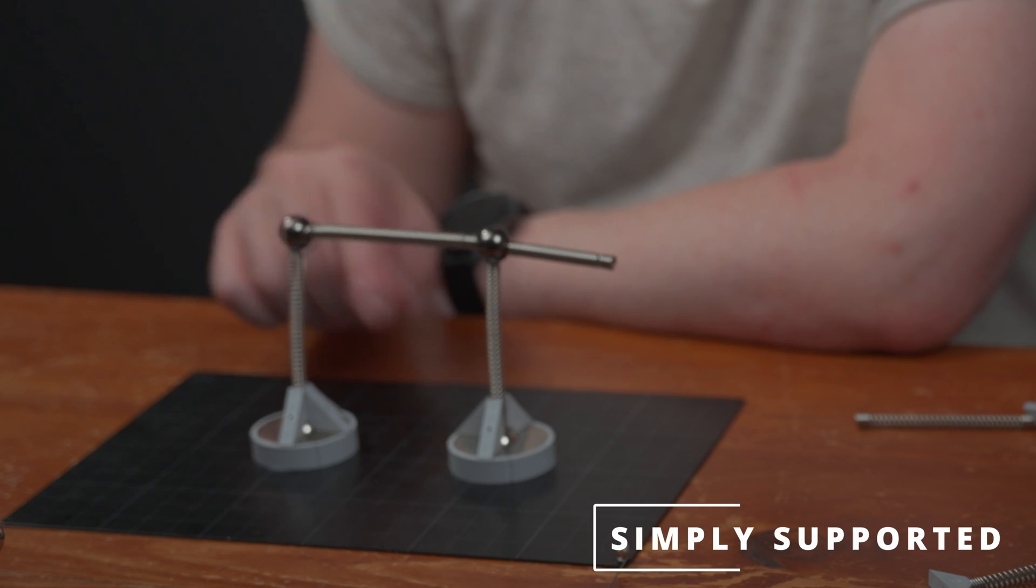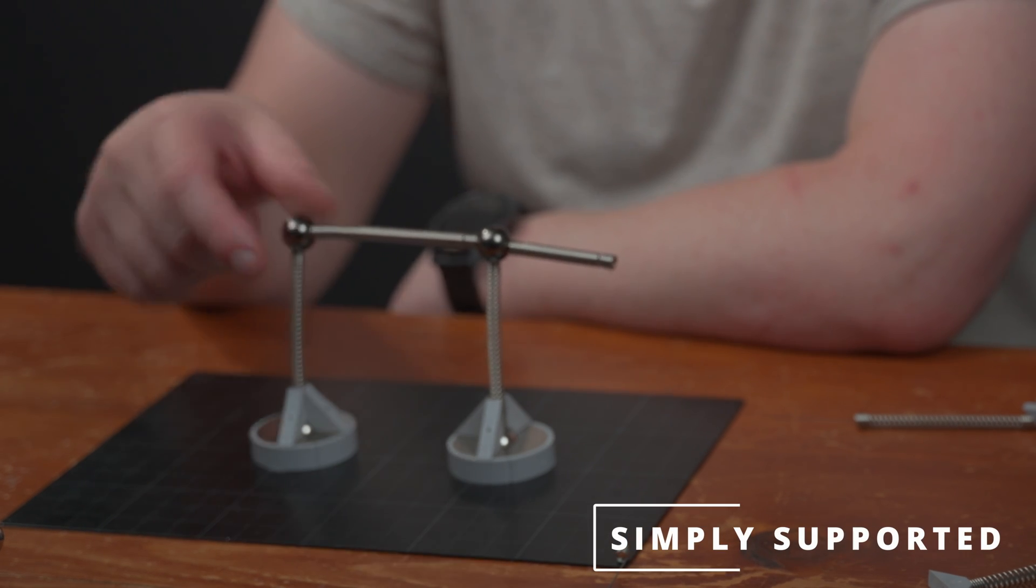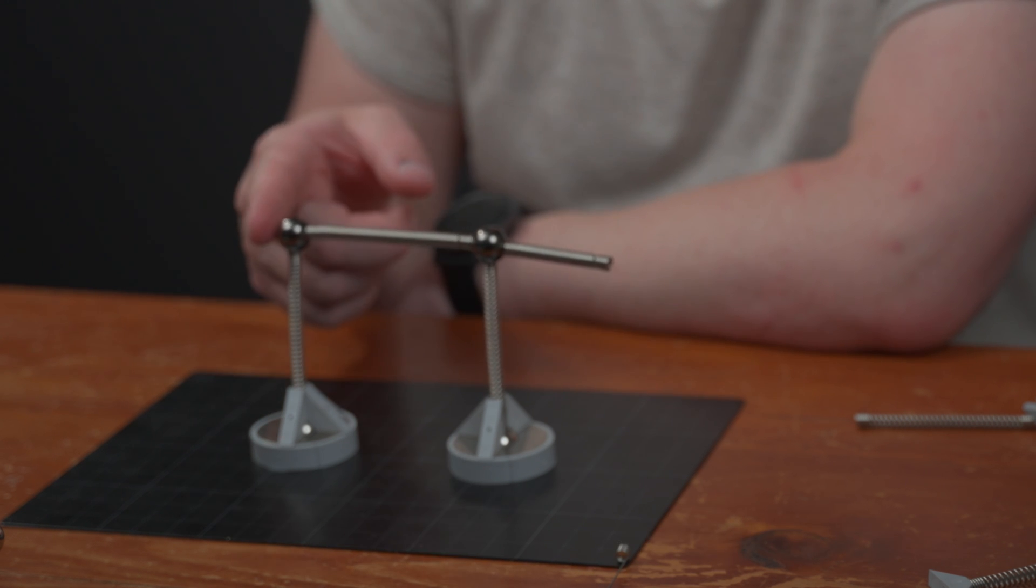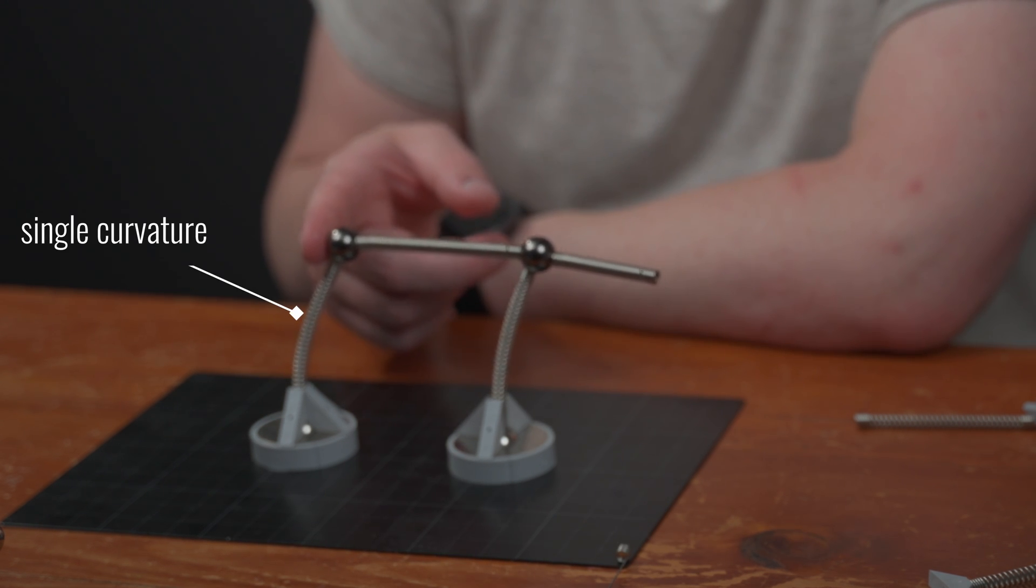We can see when we bend a structure like this, we've got a fixed joint at the bottom but a pin joint at the top as we don't have any fixity through here. When we push it, it's only got single curvature.